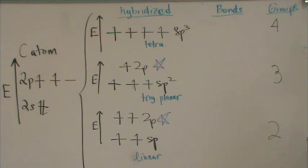The SP3, the SP2, and the SP are all hybridized orbitals. Now, each of these will give a different type of bond.